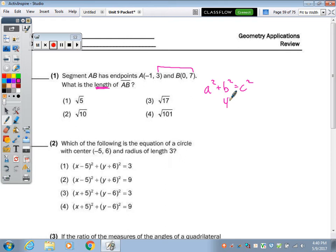From 3 to 7 is 4 away. From negative 1 to 0 is 1 away. So you're doing a squared plus b squared equals c squared, and you figure out the distance as the square root of 17.